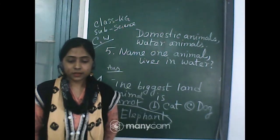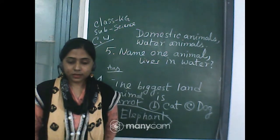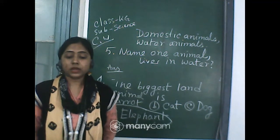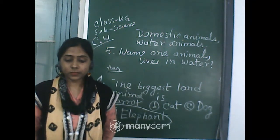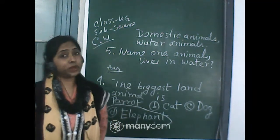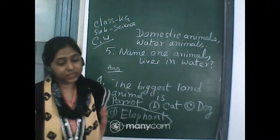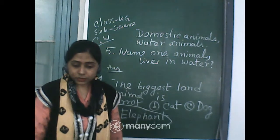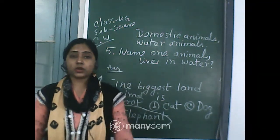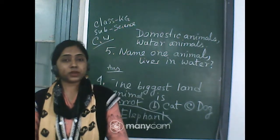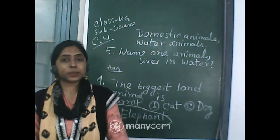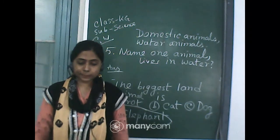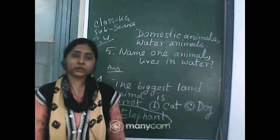I am asking for animals that live only in water. Samasthita wrote fish, Oshmita wrote octopus — very good! Blue whale is also correct. Fish and octopus are good answers. Prithviraj suggested turtle, but turtle can also be seen on land, so it is not strictly a water-only animal.